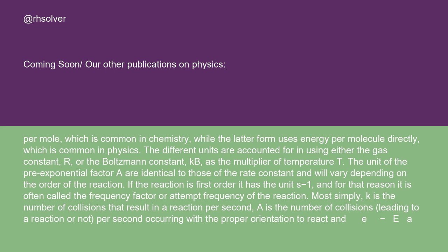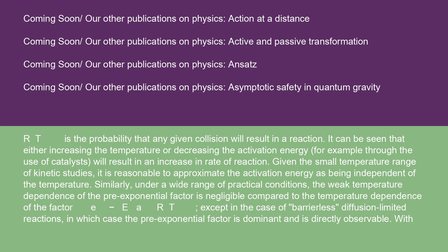The different units are accounted for in using either the gas constant R, or the Boltzmann constant kB, as the multiplier of temperature T. The unit of the pre-exponential factor A are identical to those of the rate constant and will vary depending on the order of the reaction. If the reaction is first order, it has the unit s^(-1), and for that reason it is often called the frequency factor or attempt frequency of the reaction. Most simply, K is the number of collisions that result in a reaction per second. A is the number of collisions, leading to a reaction or not, per second occurring with the proper orientation to react, and e^(-Ea/RT) is the probability that any given collision will result in a reaction.